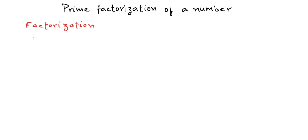For example, if we have the number 24, we can write this number 24 as 2 into 12. Now 2 and 12 are both factors of 24. This is one possible factorization and we can have other possible factorizations for 24 as well.